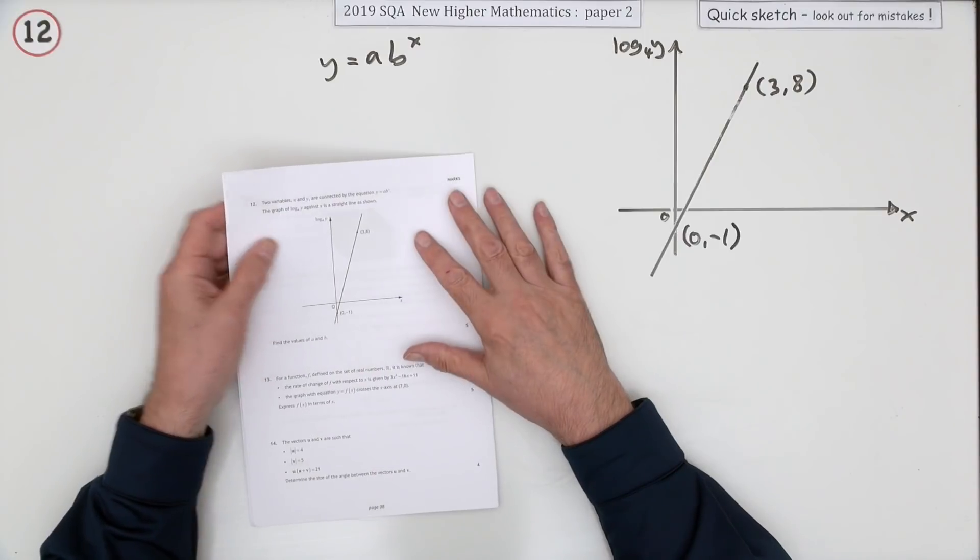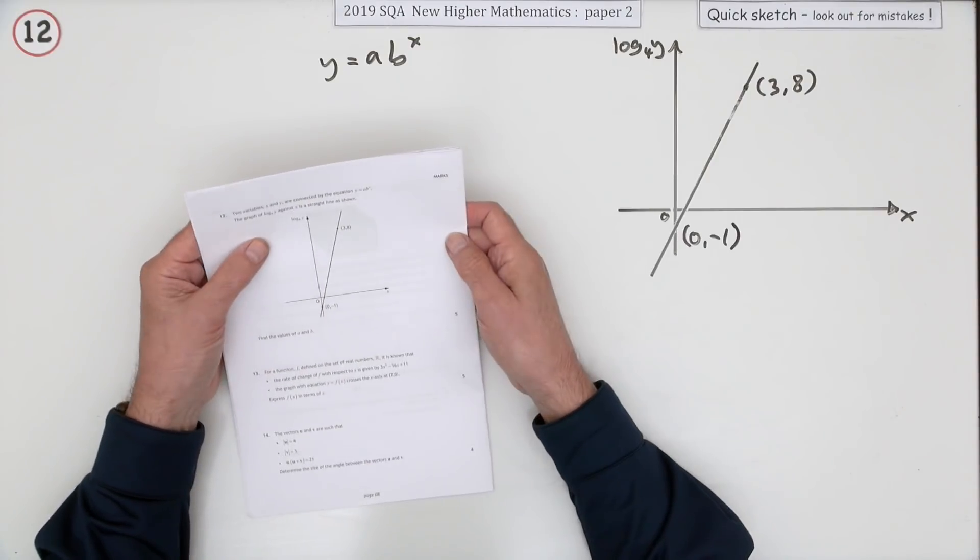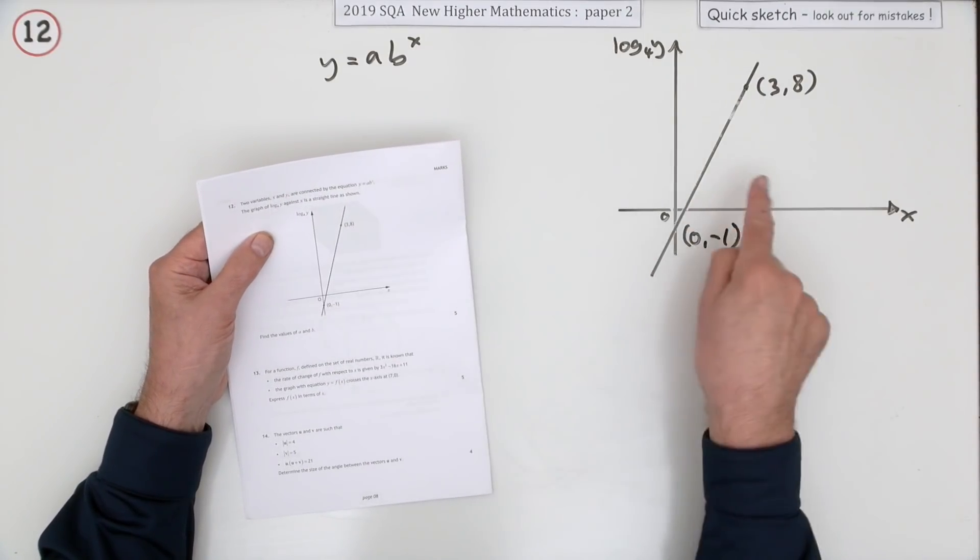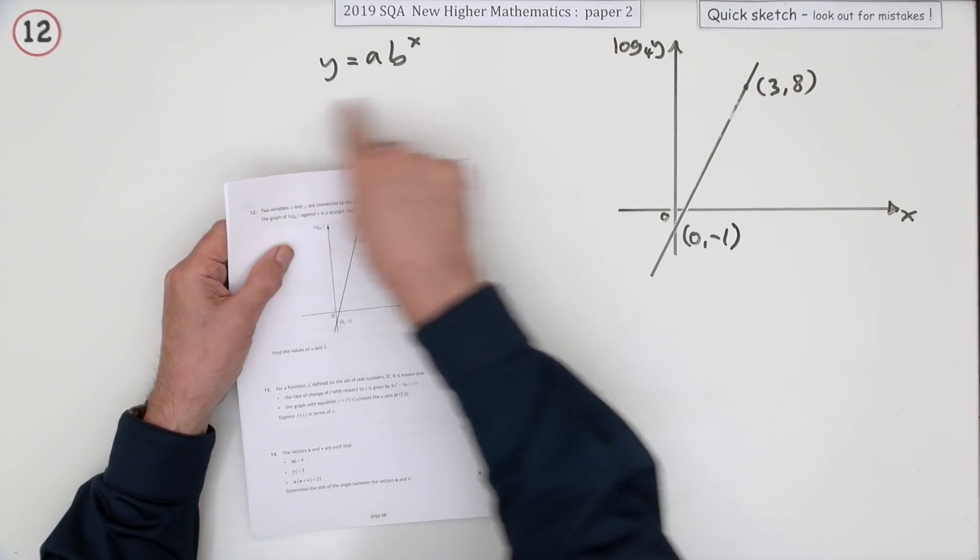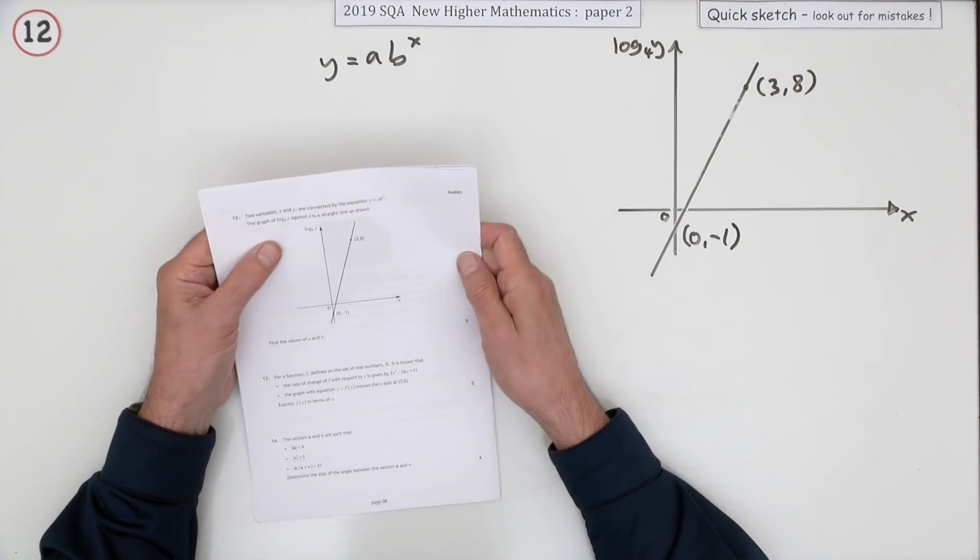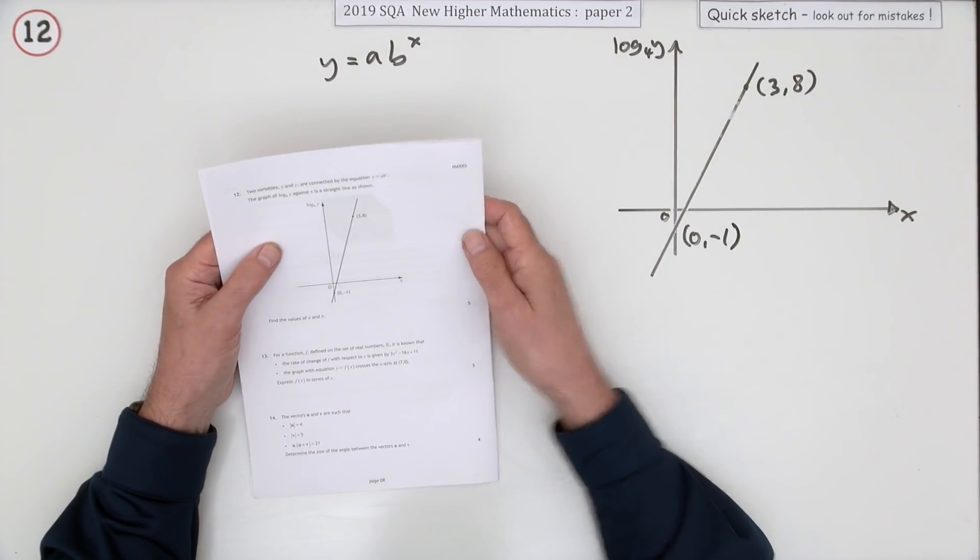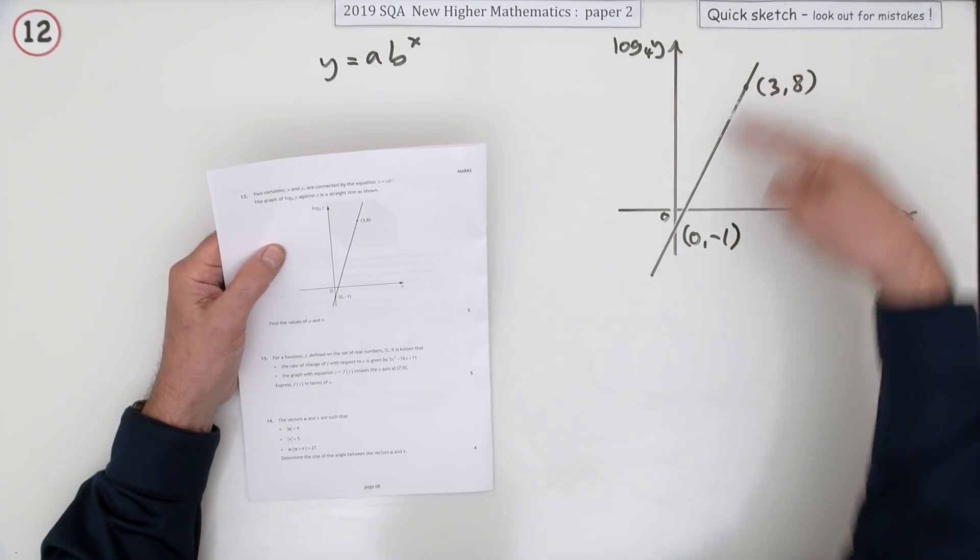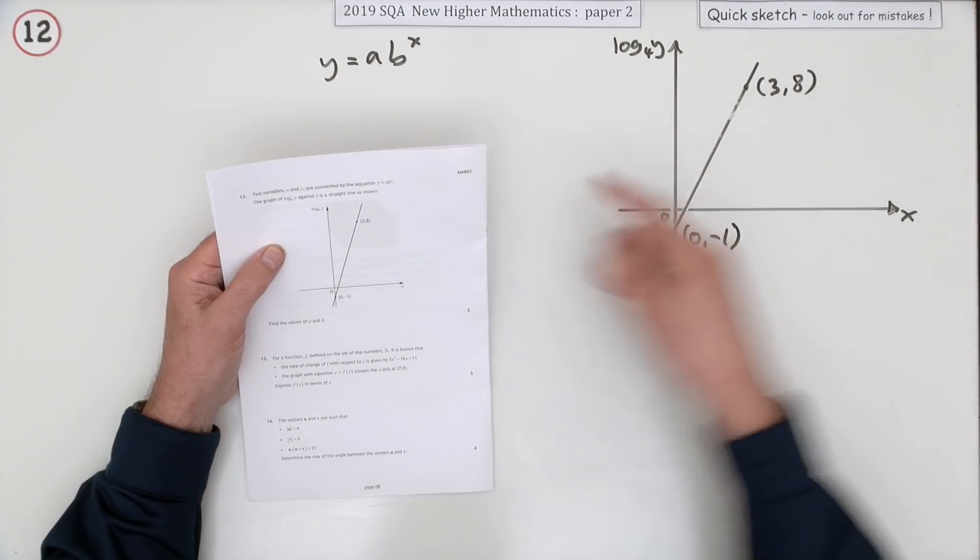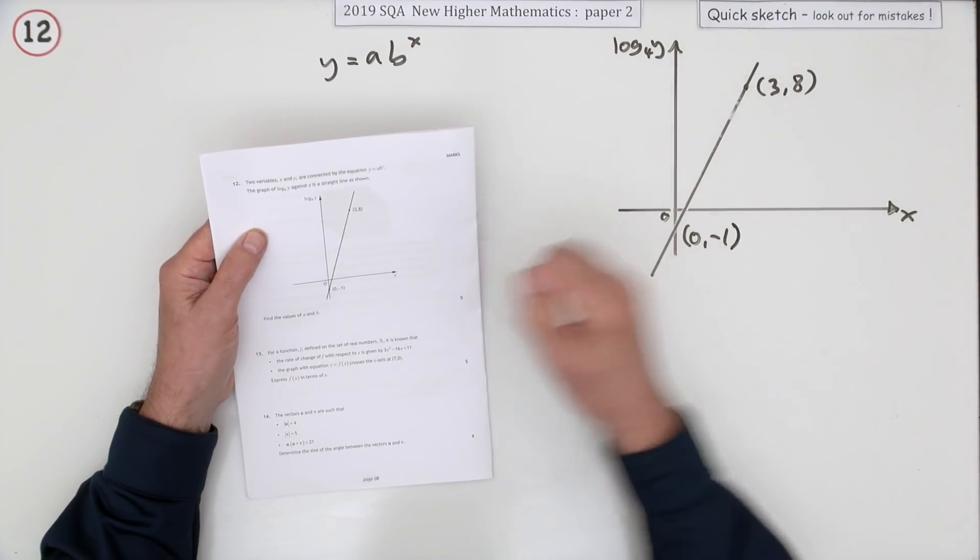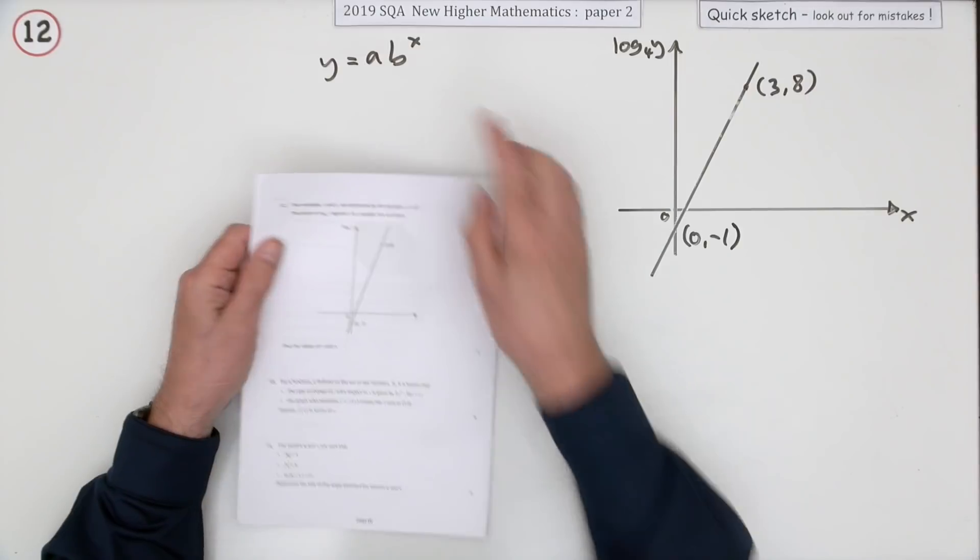Let me not put you off - it's not actually that bad. It says two variables x and y are connected by this equation. You suspect, so you produce a log graph. It's an experimental data type question. The resultant line on this graph passes through these two points. If that's the case, what are the values of a and b?